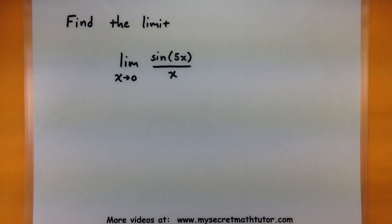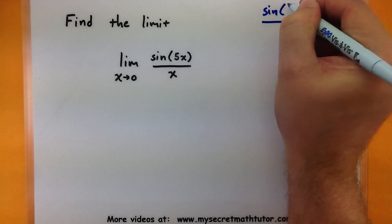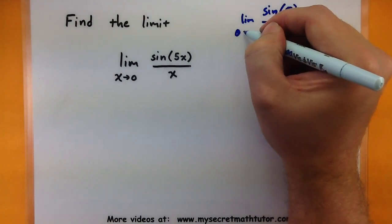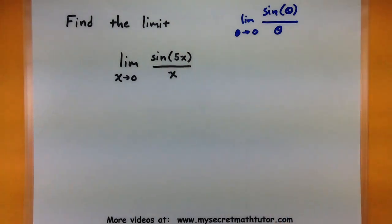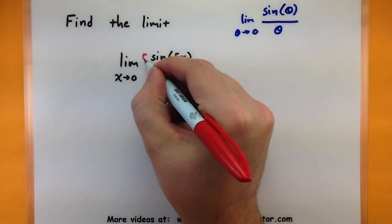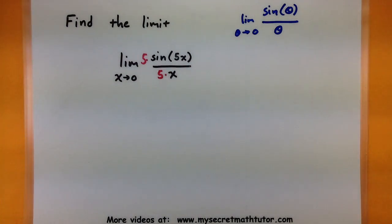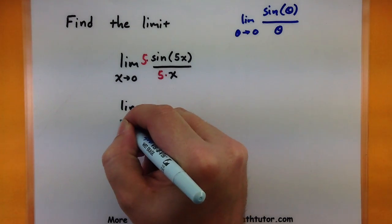So in this first one we want to figure out what is the limit as x approaches 0 of sine of 5x over x. Now this doesn't quite fit what we're looking for. We really like it if what's inside the value of sine, say this is our angle, matches what's on the bottom. And what we're getting here is that we have a 5 but we don't have a 5 on the bottom. In order to manipulate this and make it match what we need it to, I'm going to multiply the top and the bottom by 5.